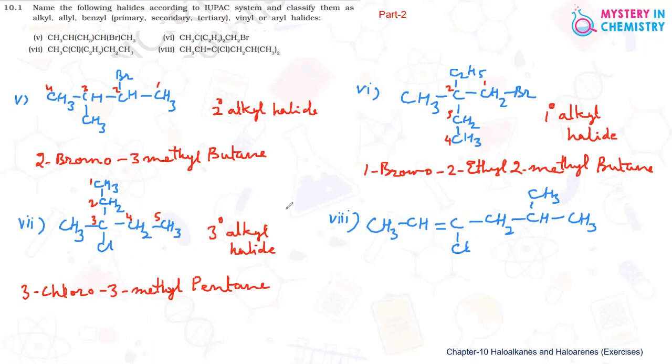It is not necessary that the longest chain should be straight always. It can be bent, but select the longest carbon chain. We are starting numbering 1, 2, 3, 4, 5, and 6. By that we can say it should be hexane. Start giving the name: it is 3-chloro.